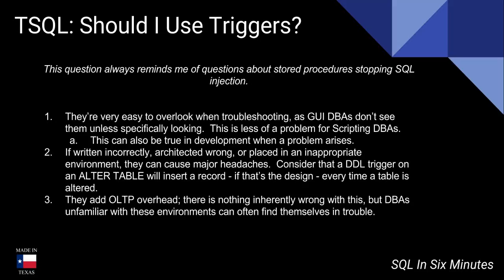Number two: if written incorrectly, coded incorrectly, architected wrong, or placed in an inappropriate environment — those are three different situations, but they can cause major headaches. Triggers can have unintended effects on things like replication, so you have to be very careful. Think about updating a million records when you have a trigger on an update — what do you think is going to happen? If it's written poorly or architected wrong, in other words if you're not capturing what you need or not thinking through the consequences, or placed in an inappropriate environment, it'll cause headaches.